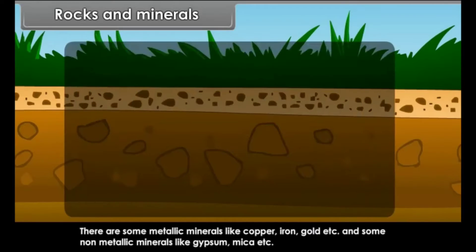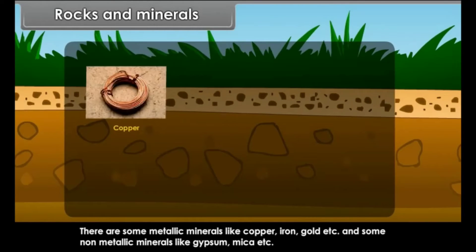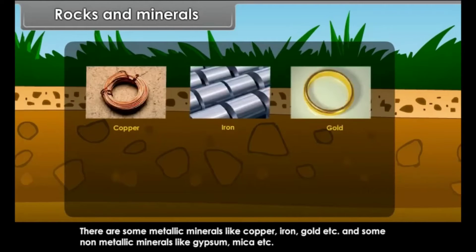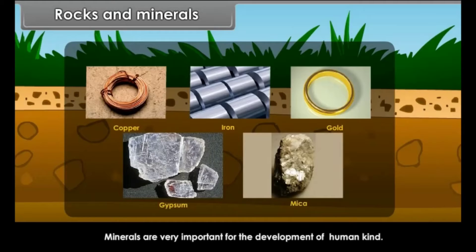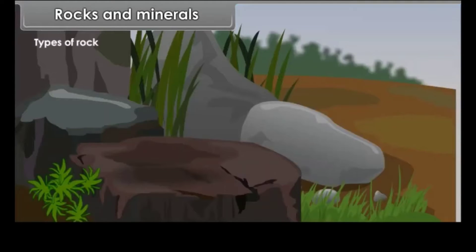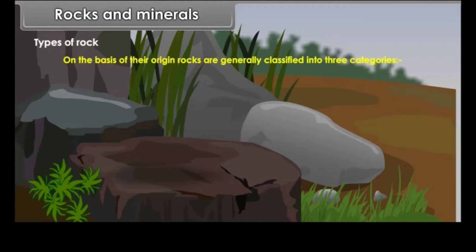There are some metallic minerals like copper, iron, and gold, and some non-metallic minerals like gypsum and mica. Minerals are very important for the development of humankind.